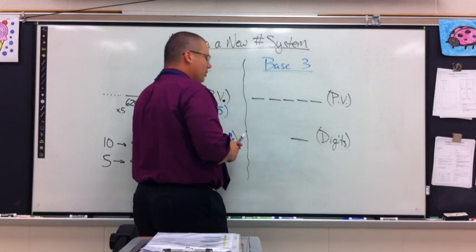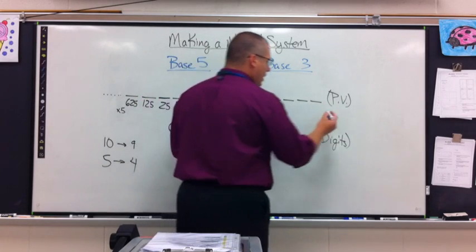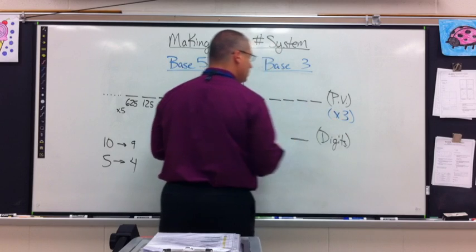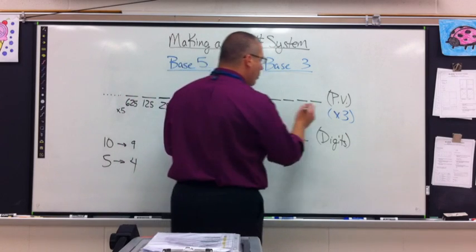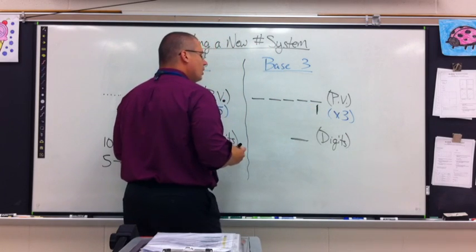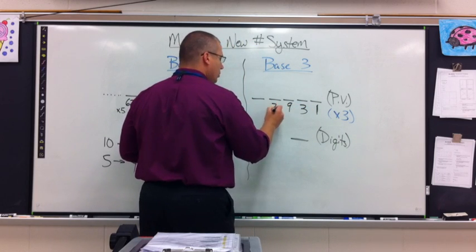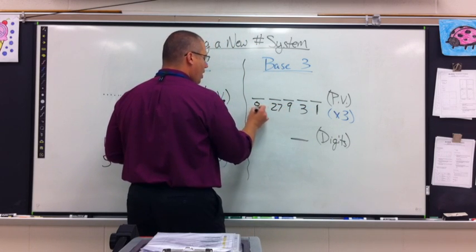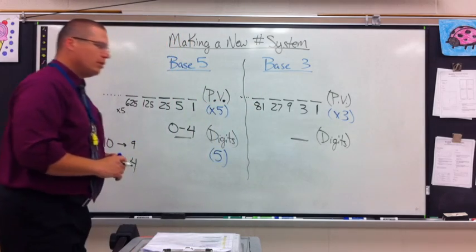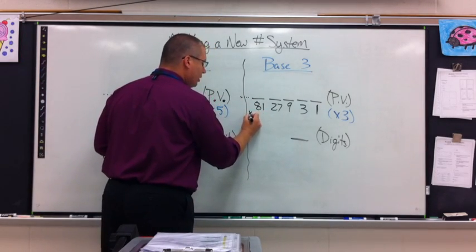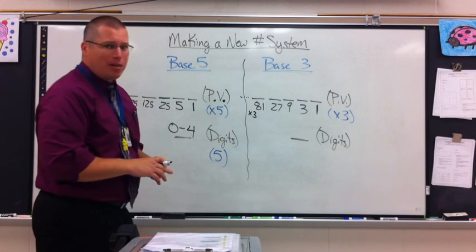What would my place values be? What would I multiply by? Hopefully, you say by 3. The first place value would be the ones column. 3, 9, 27, 81, and on and on. Again, multiply by 3. Find the next place value. What's after 81? Times 3. I think it's 243.